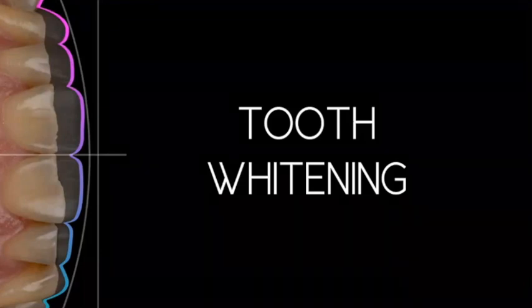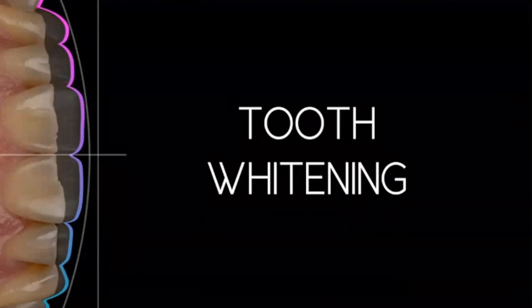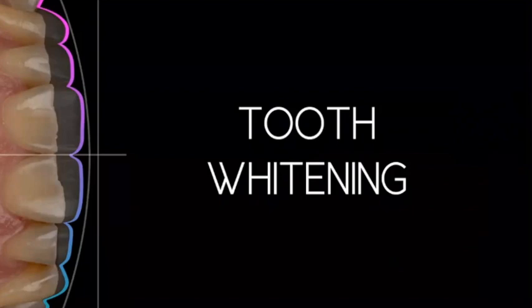Strategy number one is tooth whitening. For me, tooth whitening is the best currency in dentistry because it costs us almost nothing. Rather than thinking of it purely as a profitable procedure, in my practice we use tooth whitening as a currency. We sell upper and lower whitening for £400, advertised in reception so patients see its high value. Then if anything goes wrong — running late, cancelling an appointment — we can offer tooth whitening and the patient feels they're getting £400 of treatment.